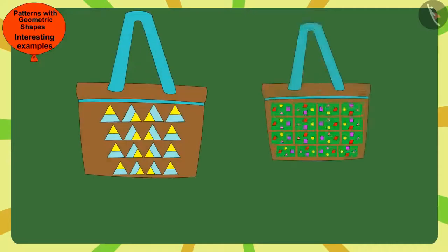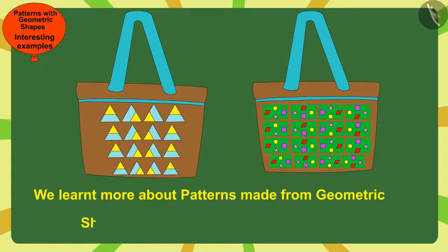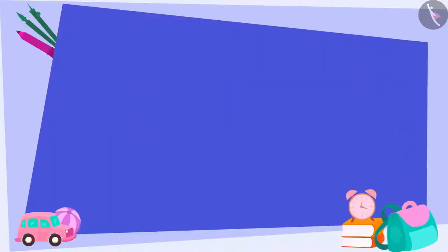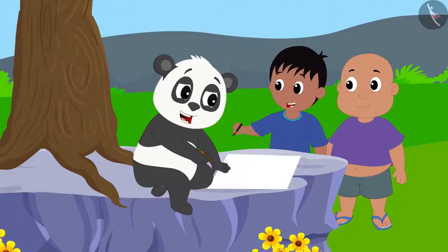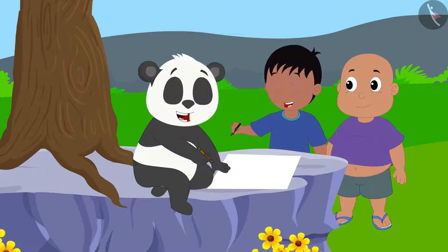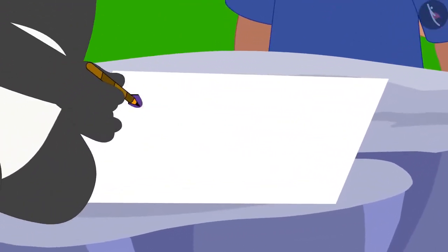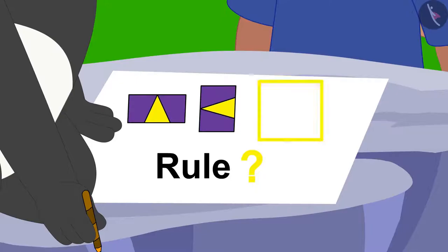Hello children, in the previous video, we learned more about patterns made from geometric shapes by some interesting examples. In this video, we will see some fun facts related to this. Raju, Bablu and Golu are playing a unique game. Golu will show a pattern and Raju and Bablu must find the rule of that pattern and complete it.